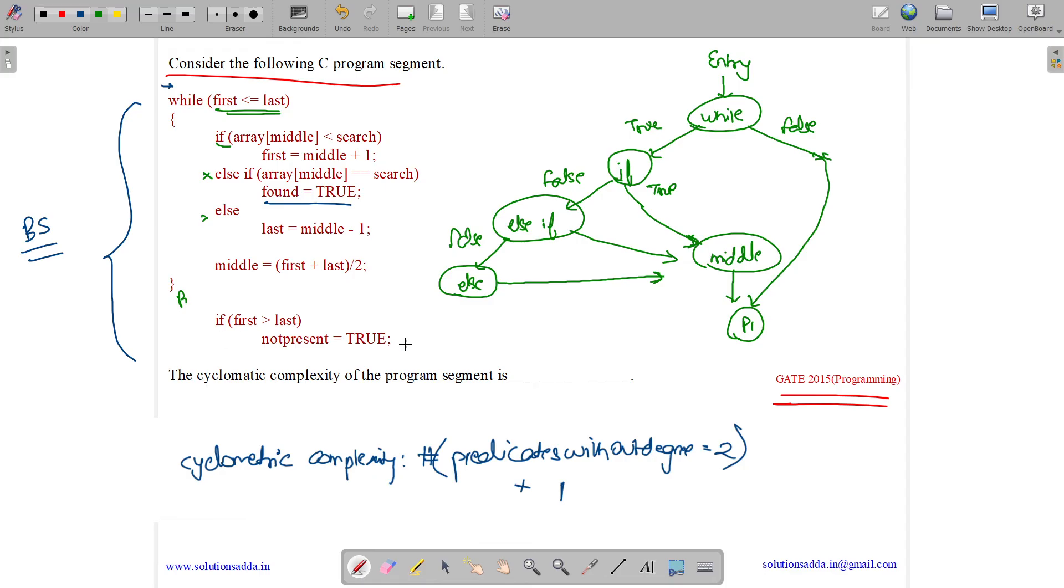Now from this point P1, we will go to if. Now if will either evaluate to true or false. If it evaluates to false, we will exit the program. If it evaluates to true, we will do this statement as one, and then we will do exit.